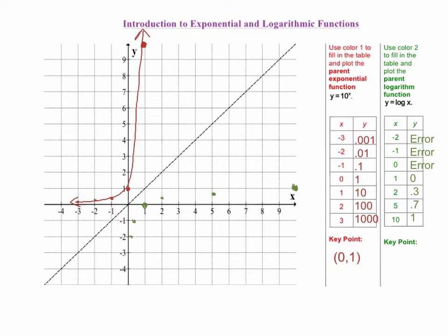Your points should look something like mine. Now go ahead and connect your dots to complete your curve. Hopefully your curve looks a little like mine. Now take a look at both of these curves and see if you can tell what the key point is for the parent log function. If you guessed (1, 0), you're correct.